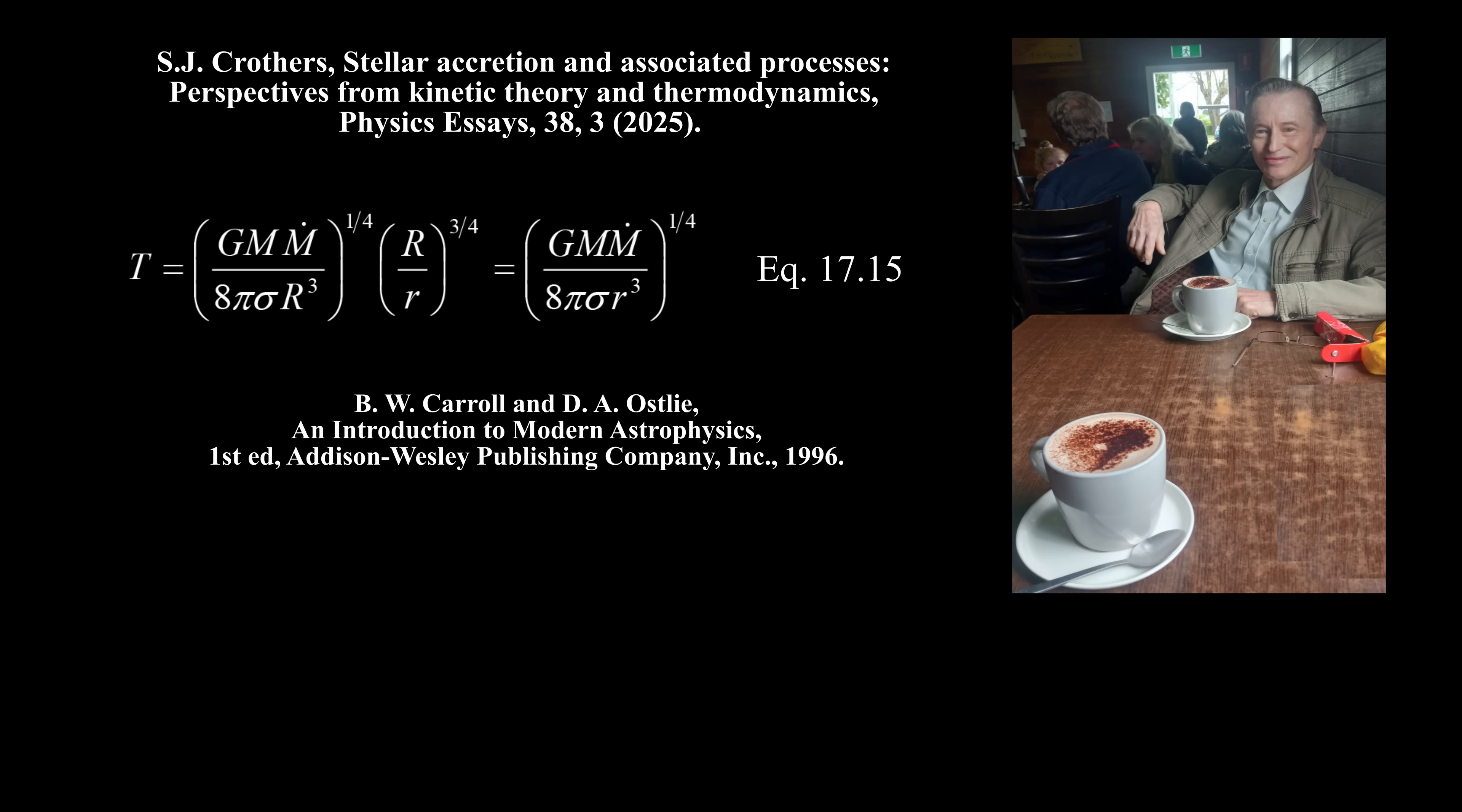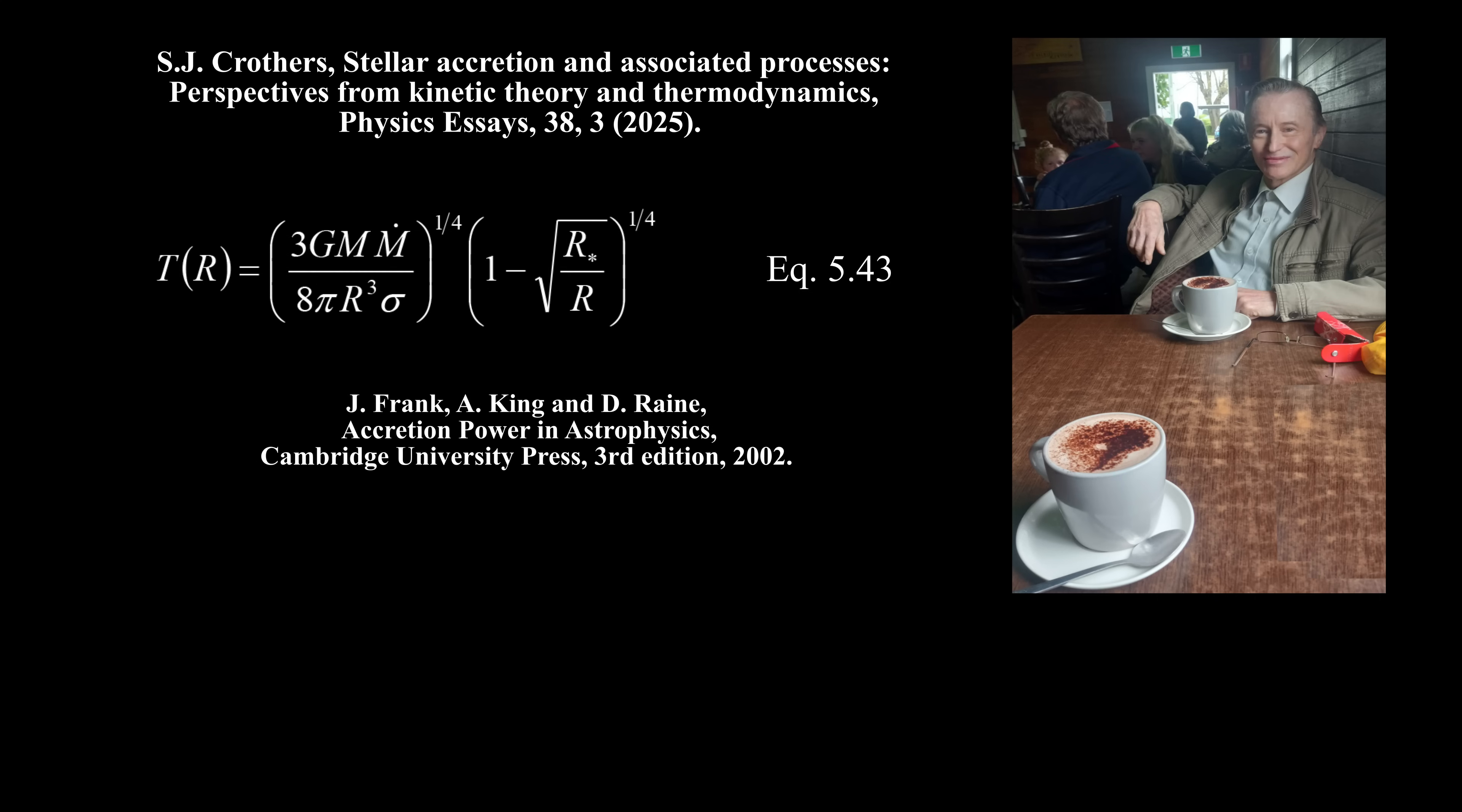Taking into account a supposed thin turbulent boundary layer, Carroll and Ostlie give the accretion disk temperature at their equation 17.16. Yet again, the left side is intensive, but the right side is not, so the equation is false.